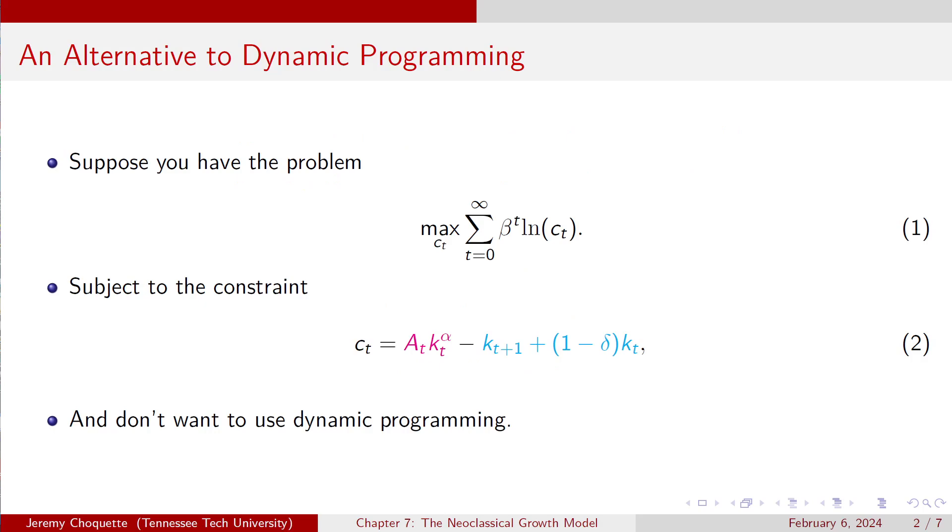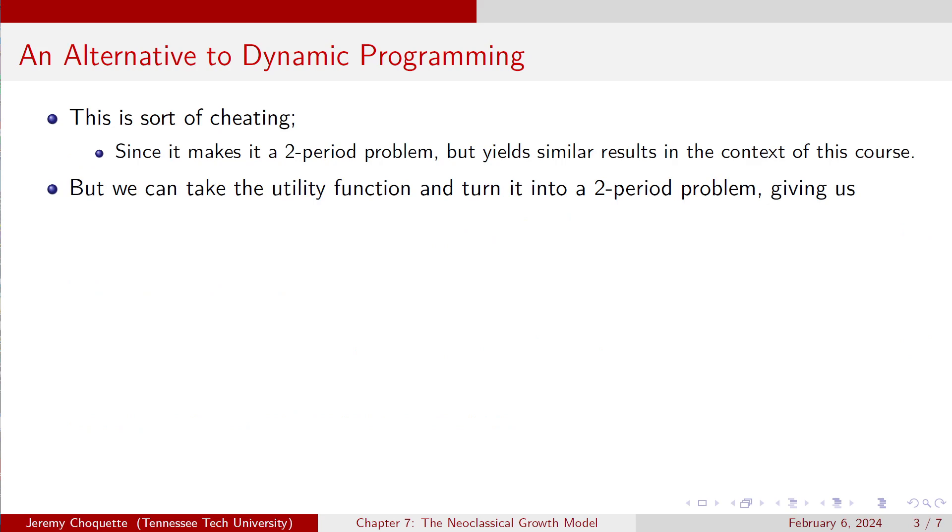So I decided that there's another way we can do this. Actually, I didn't decide there's another way we can do this. There's always been another way to do this. I decided I would teach you how to do this other thing. So let's say you have that problem, right, max of ct, or maxing ct of this utility function, t goes from 0 to infinity of beta to the t times natural log of ct. And you're doing it subject to the constraint c equals output minus investment, and you don't want to use dynamic programming. What do you do?